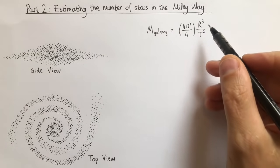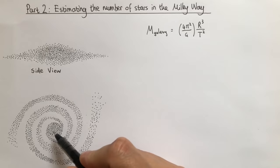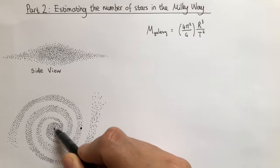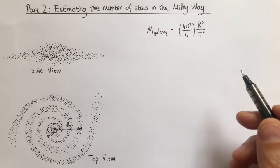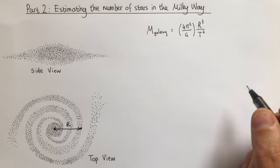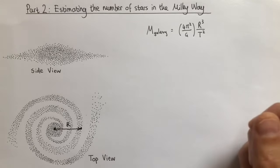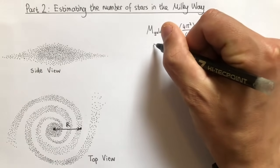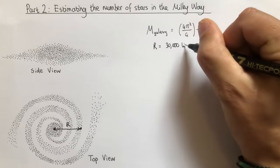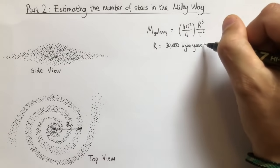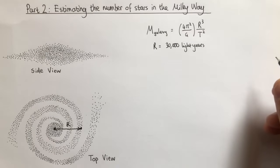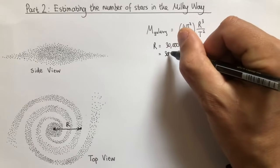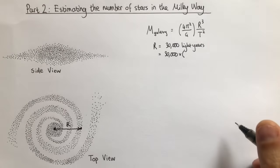In this case, R represents the distance from the centre of the galaxy to the location of the Sun, and T represents the time it takes for the Sun to complete one orbit of the galactic centre. Detailed measurements suggest that the Sun rotates around the galactic centre at a distance of 30,000 light years. A light year is the distance that light travels in one year, so we can convert 30,000 light years into metres: 30,000 times the speed of light (3×10⁸ m/s) multiplied by the number of seconds in a year.